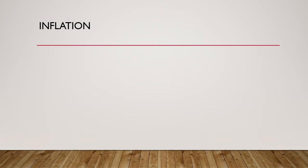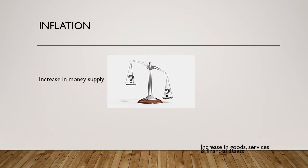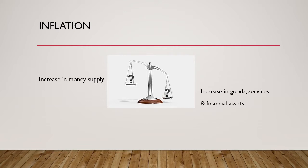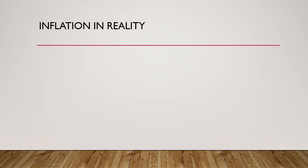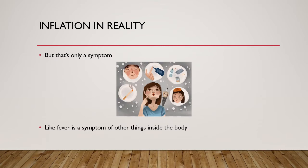Just to quickly summarize: inflation is actually an increase in the money supply vis-à-vis the increase in goods, services, and financial assets in the economy. So if the increase in money supply is much more than the increase in goods, services, and assets in the economy, it indicates inflation. Hence, price rise or price increase is just a subset of inflation, not the entire inflation definition per se. In reality, inflation is only a symptom — like fever is a symptom of something wrong in the body; similarly, inflation is also a symptom.